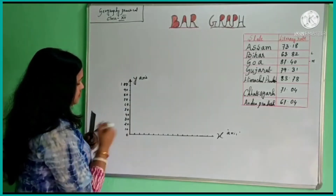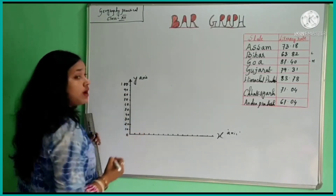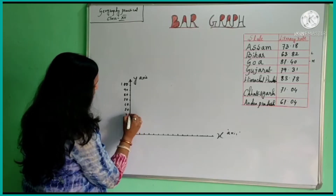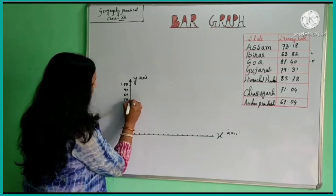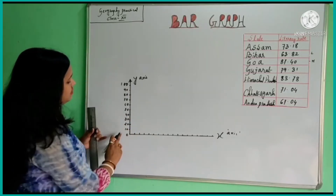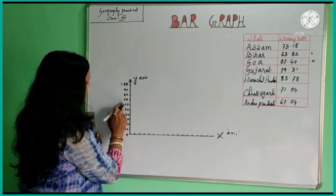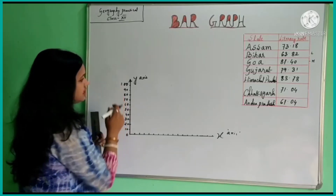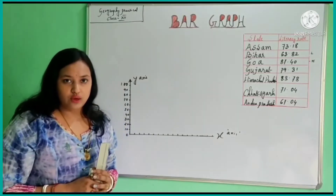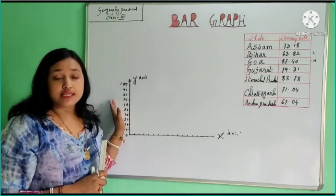On a graph paper, you just mark one centimeter, then again one centimeter — in this manner you mark one centimeter gaps. Take an interval of 10: for example 10, 20, 30, 40, 50, 60, 70, 80, 90, 100, so that we can cover our highest and lowest values. This is the scale for the vertical axis.